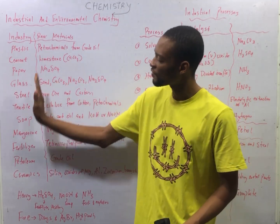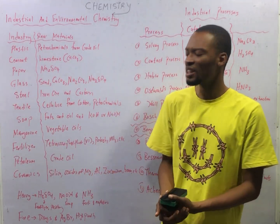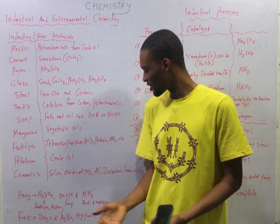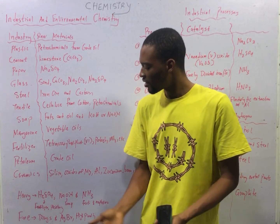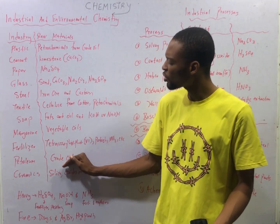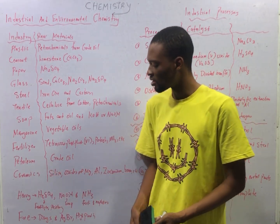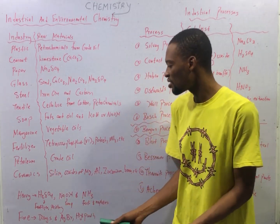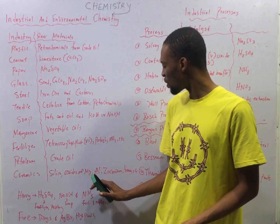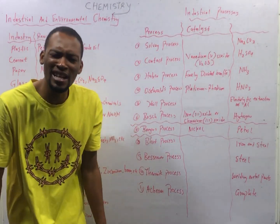All these raw materials are transformed into the finished product. In the fertilizer industry, we have calcium superphosphate, potash, and ammonia. In the petroleum industry, crude oil is the raw material. And in the ceramics industry, we have silica, various types of magnesium, aluminum, zirconium, and bromine. Those are the raw materials for the major industries.